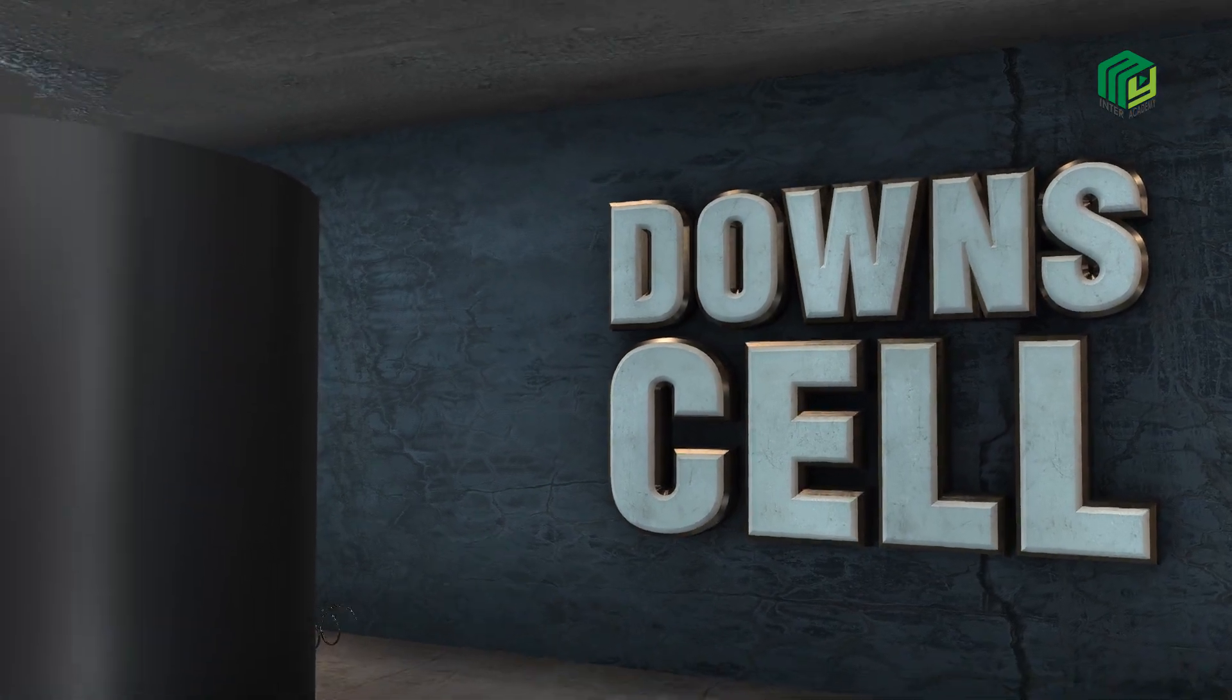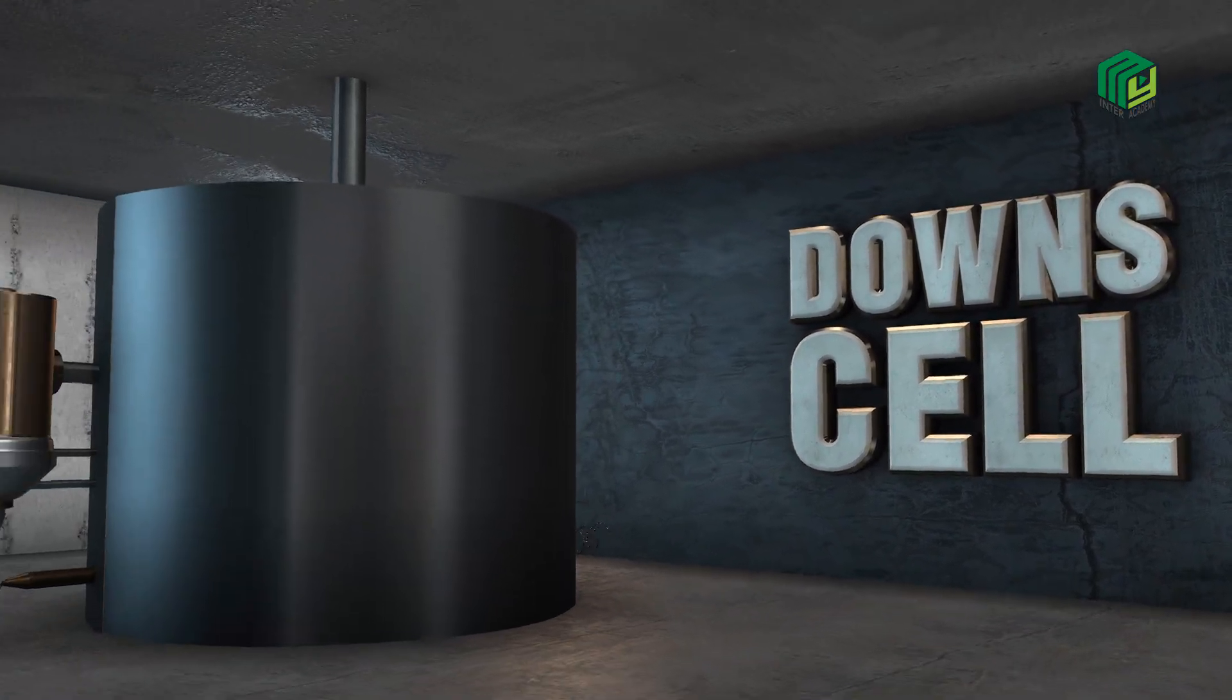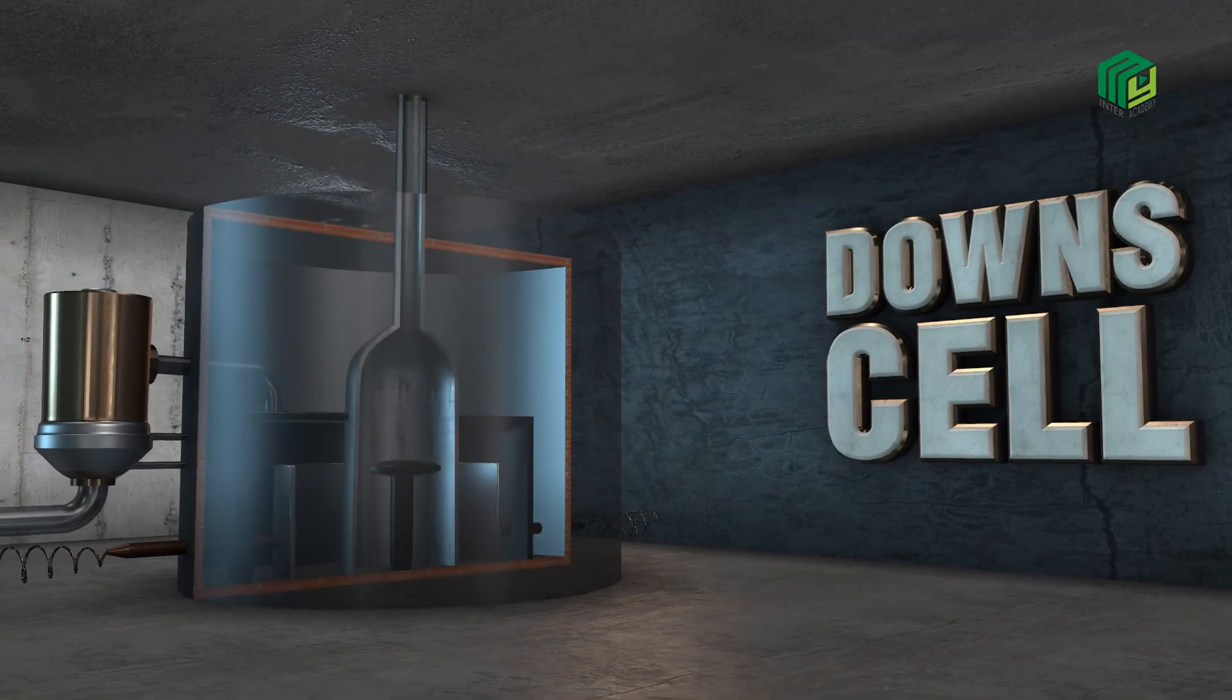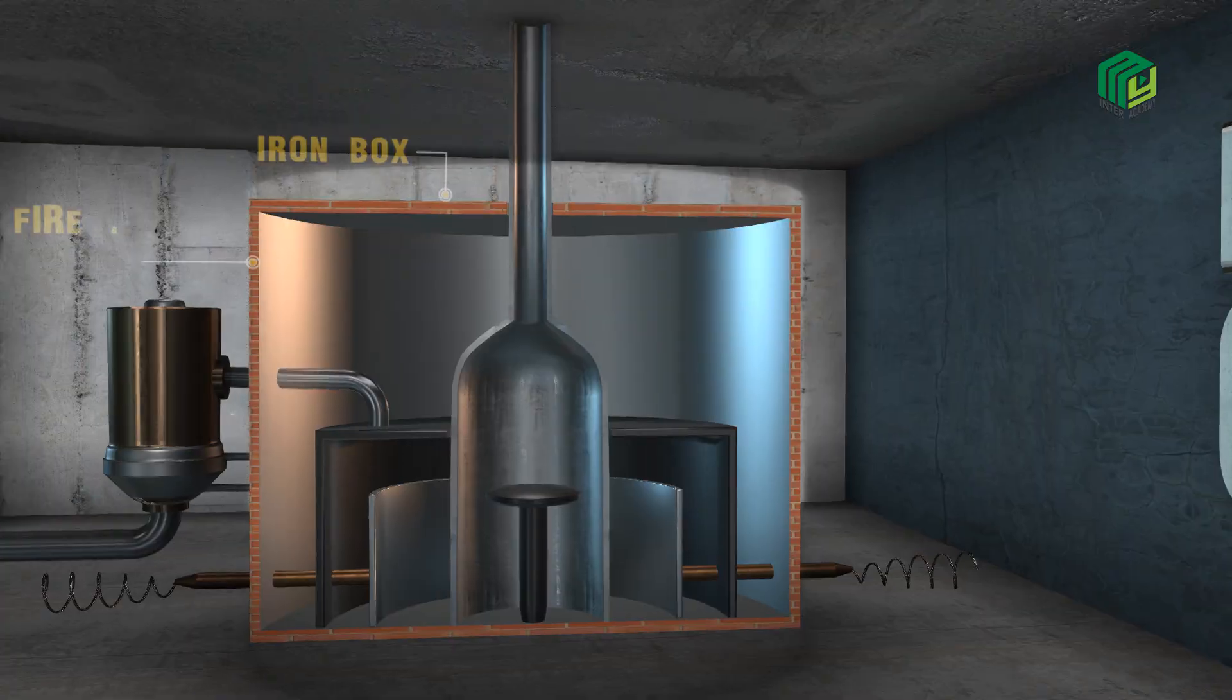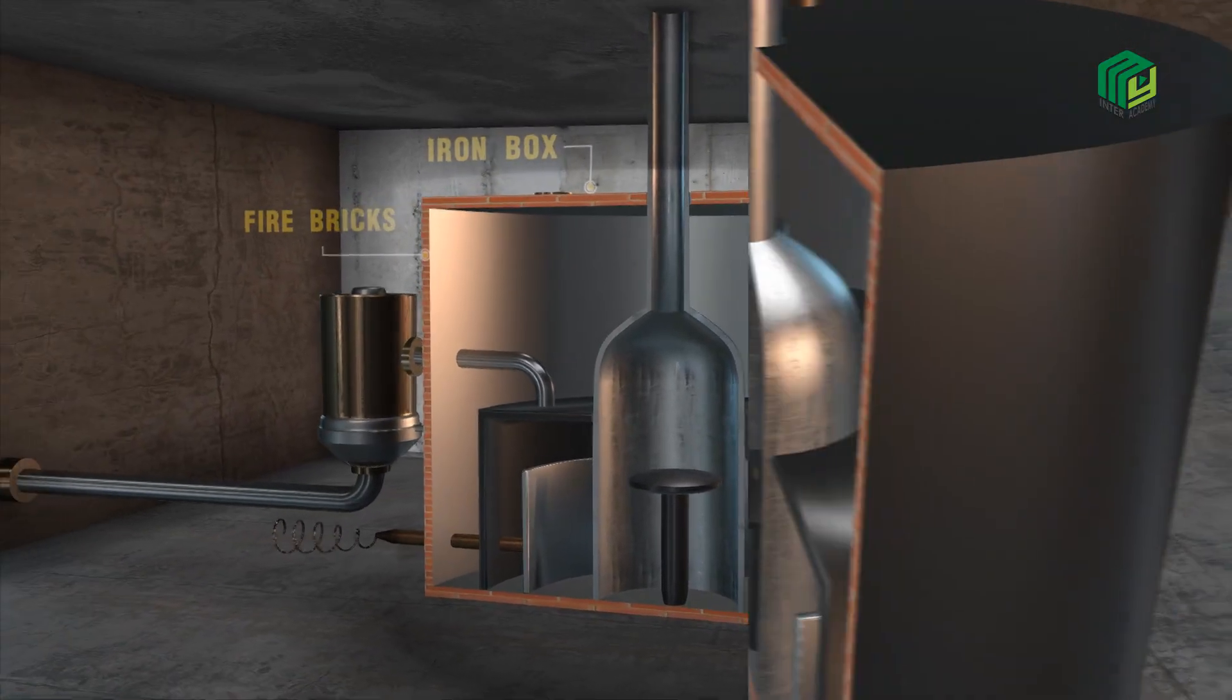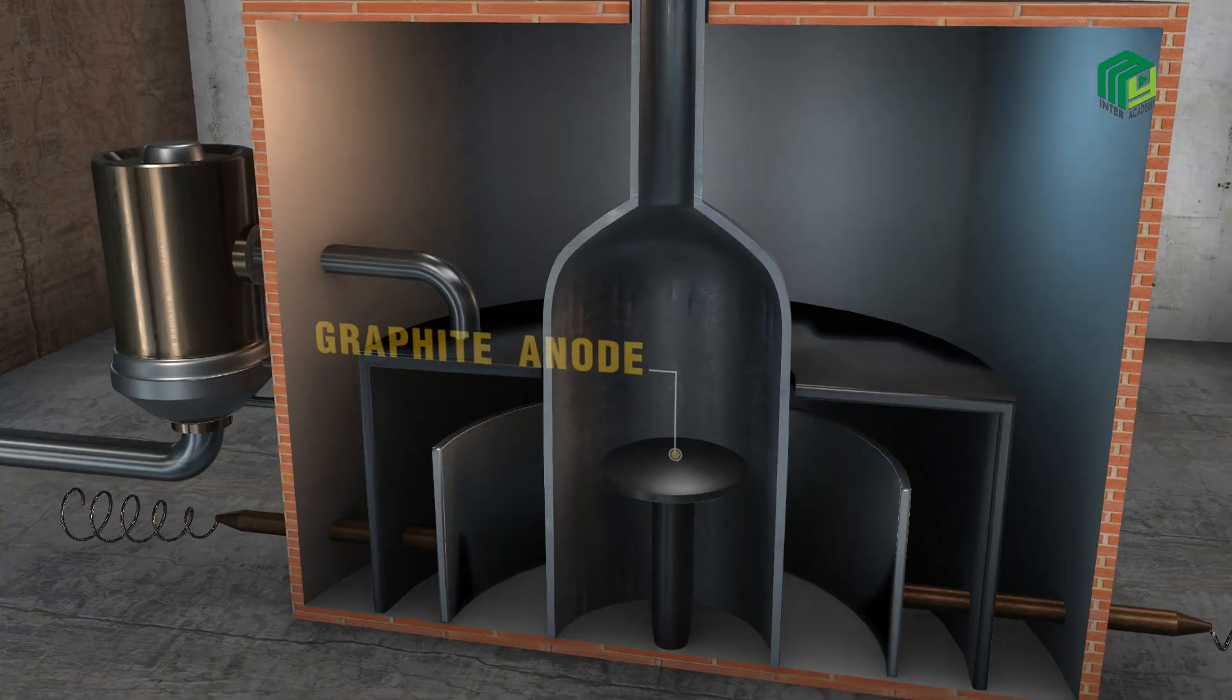Sodium metal is commercially prepared by Downs Process. This cell is made up of an iron box lined with fire bricks. A graphite anode is placed at the center of the tank.